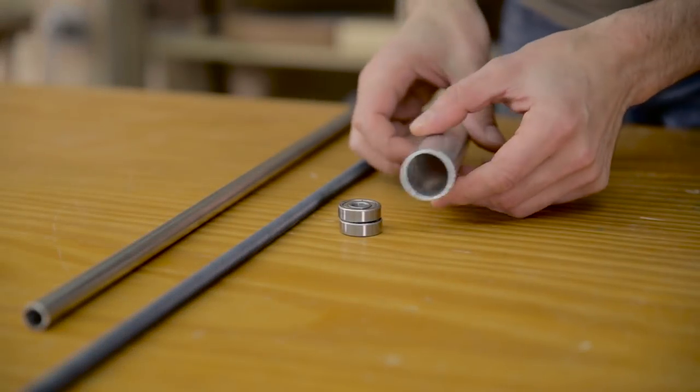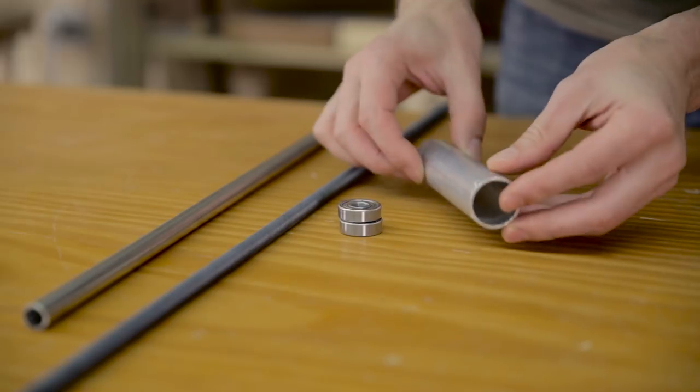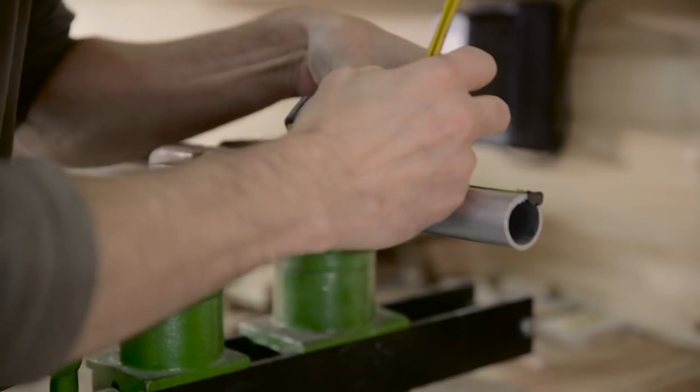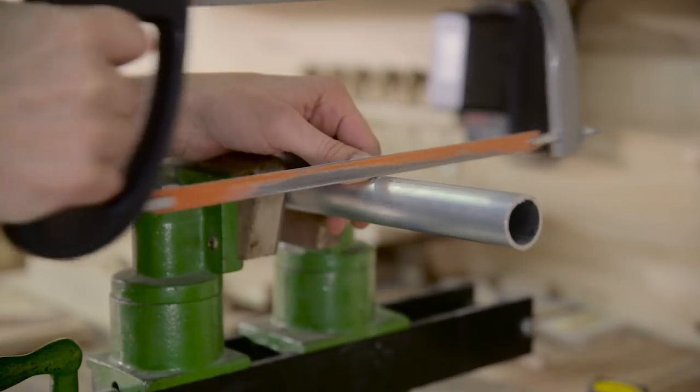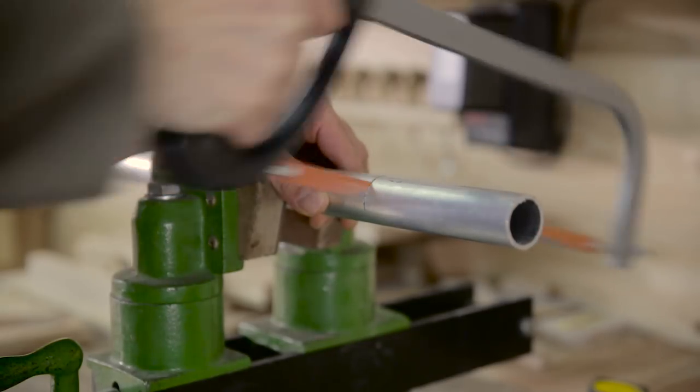I'll need some bearings, aluminum and steel pipes, and a threaded rod. First I'll cut all the necessary materials, leaving two extra millimeters with a metal cutting saw.